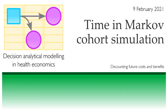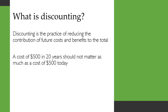Let's look at another important aspect of time in our Markov Cohort Simulation, which is the need to discount future costs and benefits. Discounting is the practice of reducing the contribution of future costs and benefits to the totals. For example, a cost of $500 in 20 years should not matter as much as a cost of $500 today.